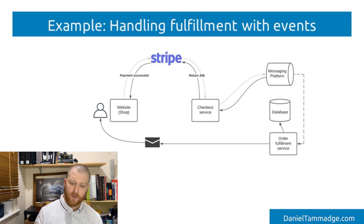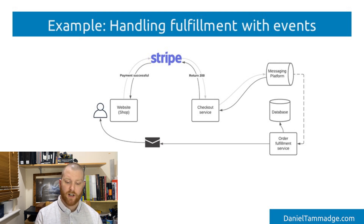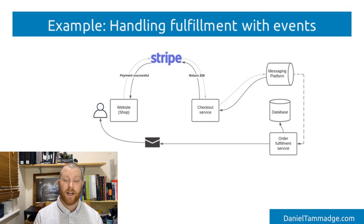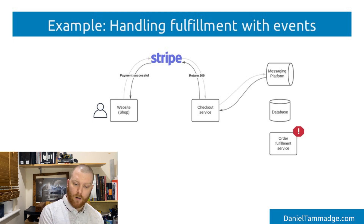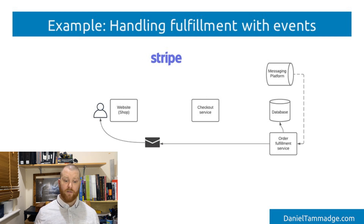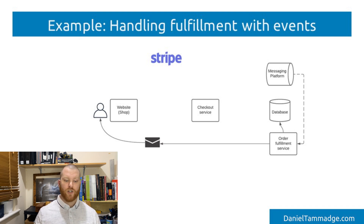As you can see, it goes through and emails the customer. Now the checkout service and the fulfillment service are now decoupled from each other, which means that the checkout service no longer needs to wait for the fulfillment service to complete and respond back, as the fulfillment service is now handled asynchronously. And what if the fulfillment service is not running or encounters an error? Well, the checkout service would not be affected, and it would still respond to Stripe that it has successfully handled the event. And when the fulfillment service resumes, it will process the events which are waiting.